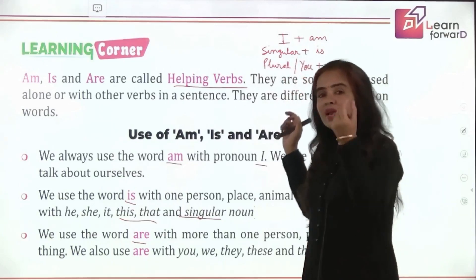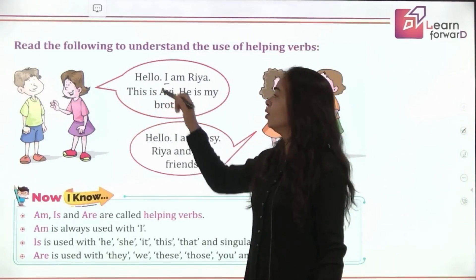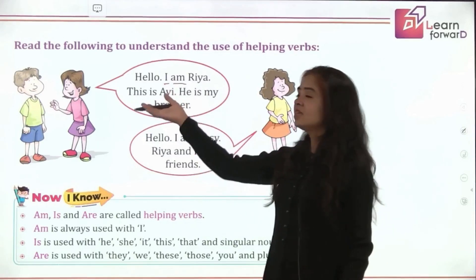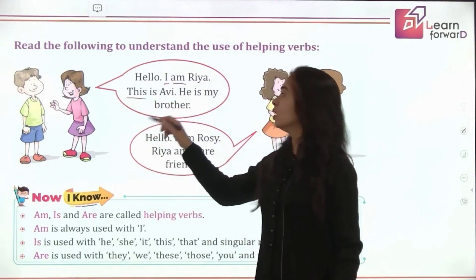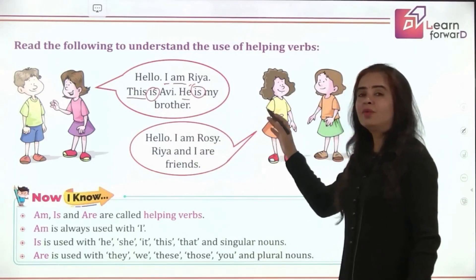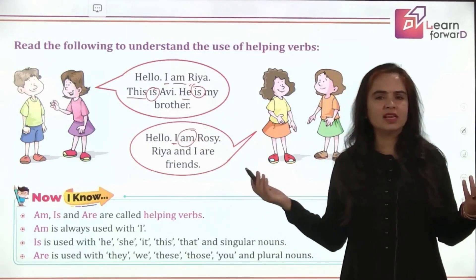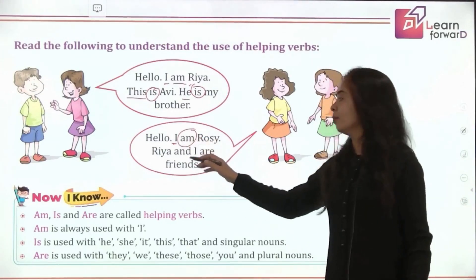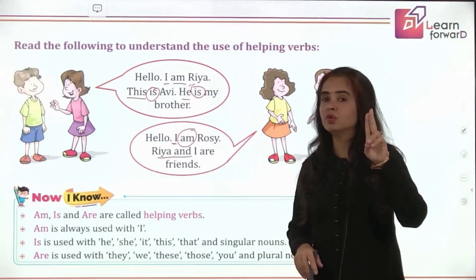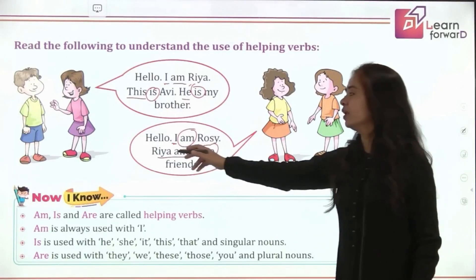Going ahead, let us read this conversation. She is talking about herself: 'I am Rhea.' Then he is introducing somebody and saying, 'This is Avi. He is my brother.' 'This' is singular; 'he' is also singular — so we are using 'is' with singular. Now, 'I am Rosie' — she is introducing herself using 'I', followed by 'am'. Then 'Rhea and I are friends' — now they are talking about two people, which becomes plural, so we are using 'are'. Easy!